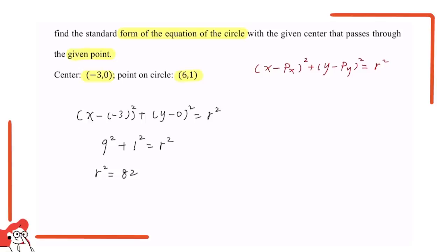So we can know the final standard equation of the circle with the given center and the given point is (x + 3) squared plus y squared equals 82. That is the answer.